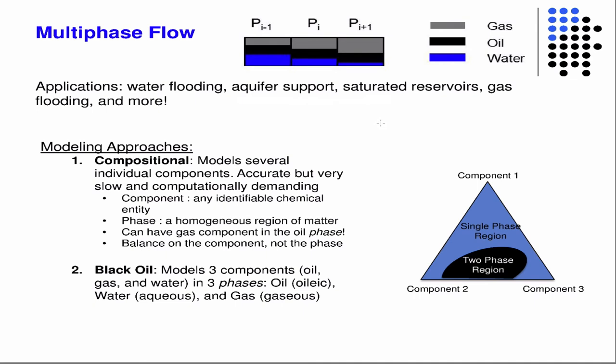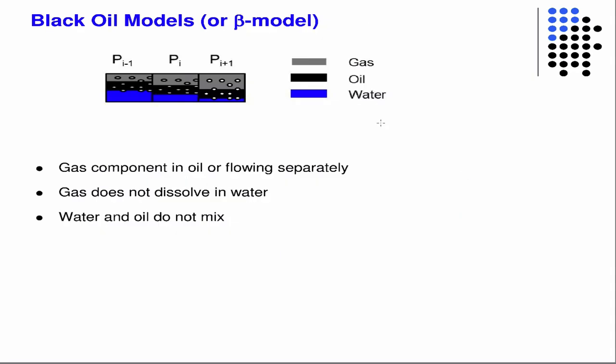And so, again, we're going to balance on the components: oil, gas, and water, but we will allow at least the gas to be in multiple phases. So you can have dissolved gas in the oil or you can have gas in the gaseous phase. And I just did it. I probably will have a hard time keeping it straight. I'll try my best, but you can have dissolved, so I'll say it again. You can have dissolved gas in the oleic phase, or you can have gas in the gaseous phase.